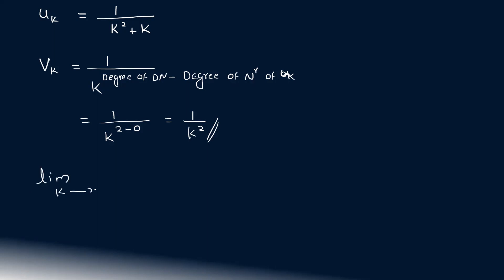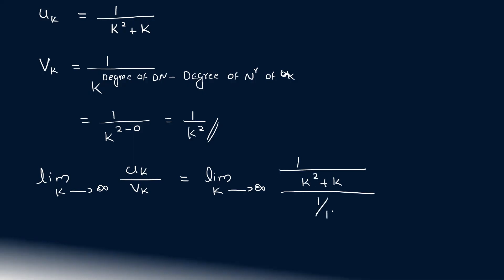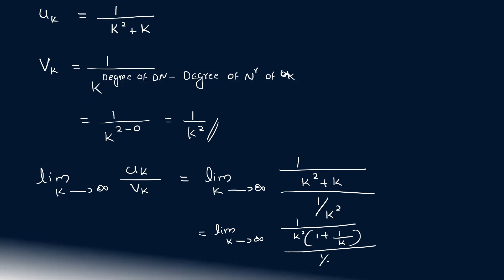Limit k tends to infinity uk by vk equals limit k tends to infinity of 1 by k squared plus k, divided by 1 by k squared. This simplifies to limit k tends to infinity of k squared divided by k squared plus k. As k goes to infinity, 1 by k tends to 0, so the limit equals 1.